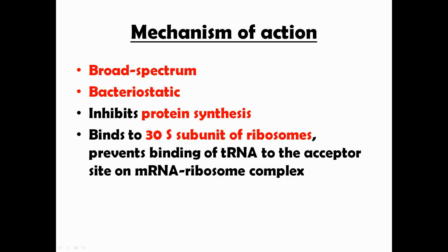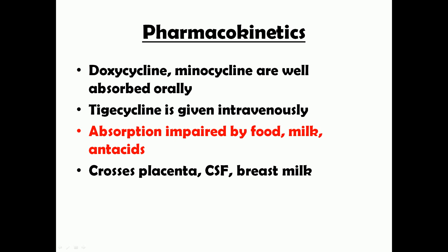Tetracyclines act by inhibiting protein synthesis. They bind to the 30S subunit of bacterial ribosomes and prevent the binding of tRNA carrying the aminoacyl to the acceptor site on the mRNA-ribosome complex. The key thing to remember is that they bind to the 30S subunit, and by doing so they prevent the addition of further amino acids to the growing protein chain.